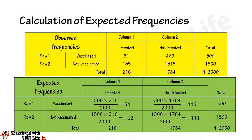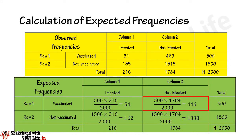Now we calculate the expected frequencies in all four cells. The expected frequency of cell 1 is the frequency of vaccinated (500) multiplied by the frequency of infected (216), divided by 2000, and we get 54. The expected frequency of cell 2 is the frequency of vaccinated (500) multiplied by the frequency of not infected (1784), divided by 2000, and we get 446.